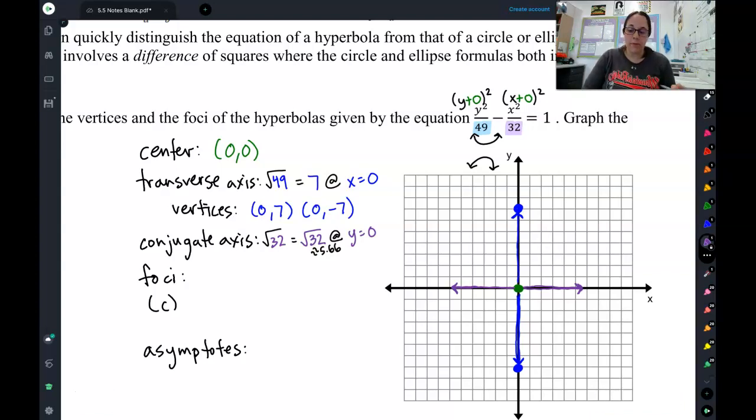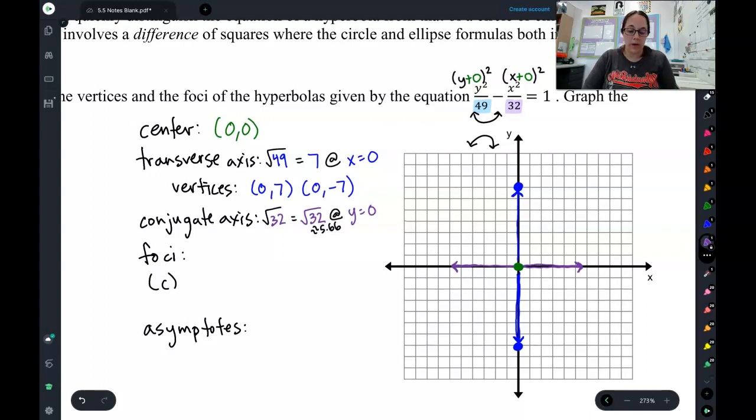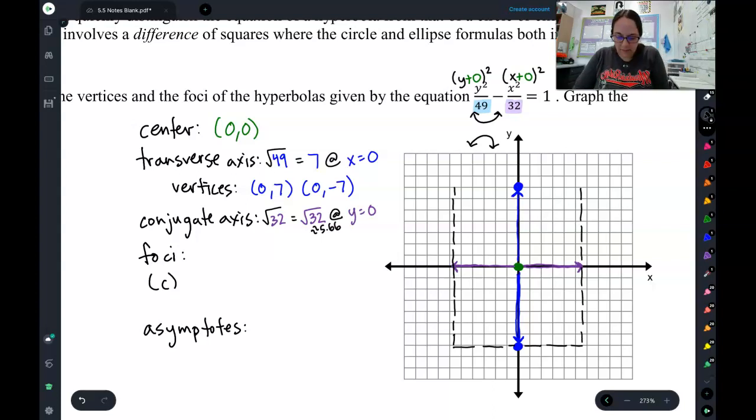Now, at this point, before I find the foci and the asymptotes, I'm going to go in and draw my guide rectangle. So I'm taking these two crisscross perpendicular axes, and I'm going to draw a rectangle that encompasses them. So there's my guide rectangle.